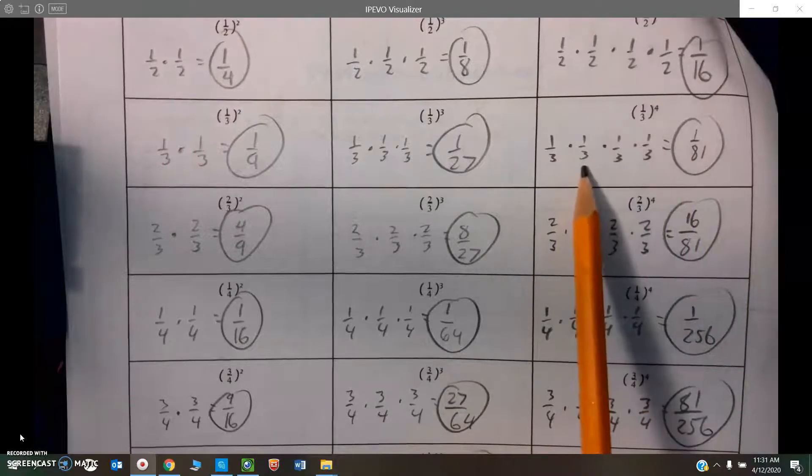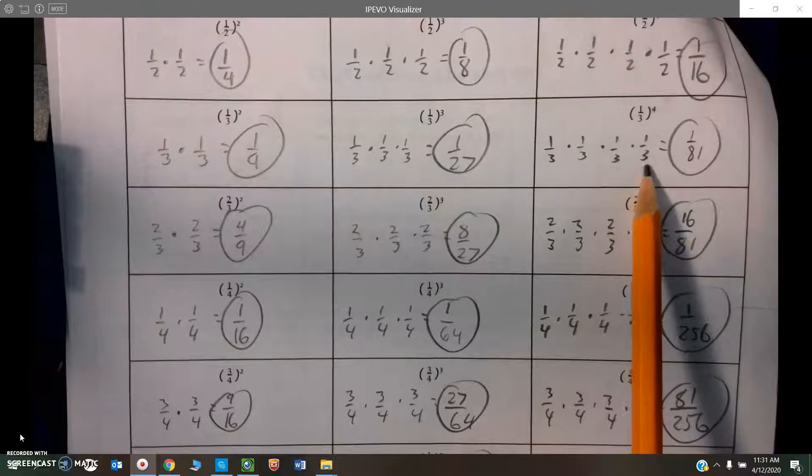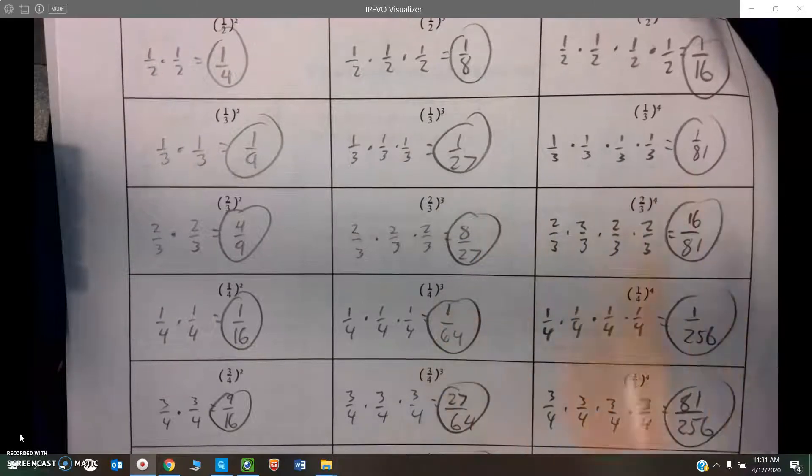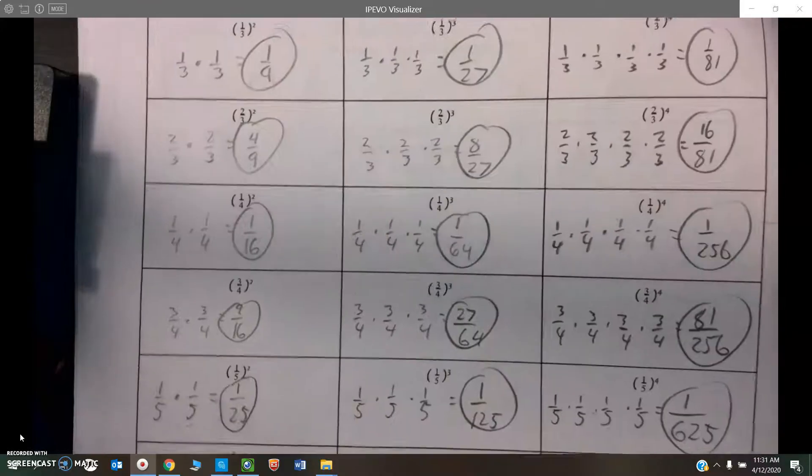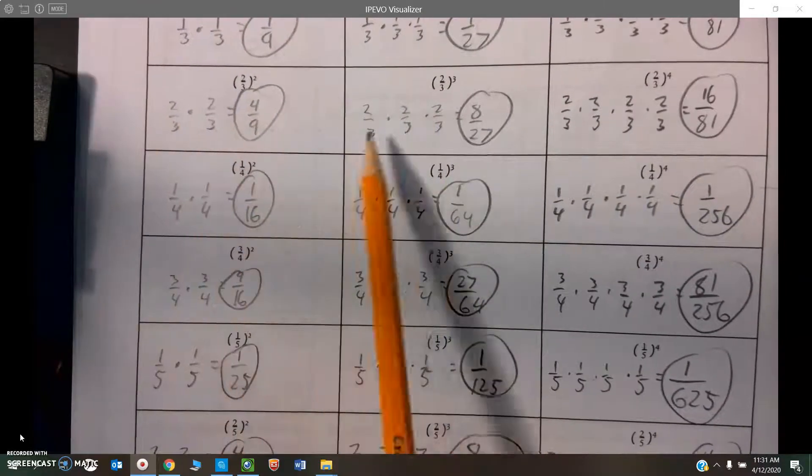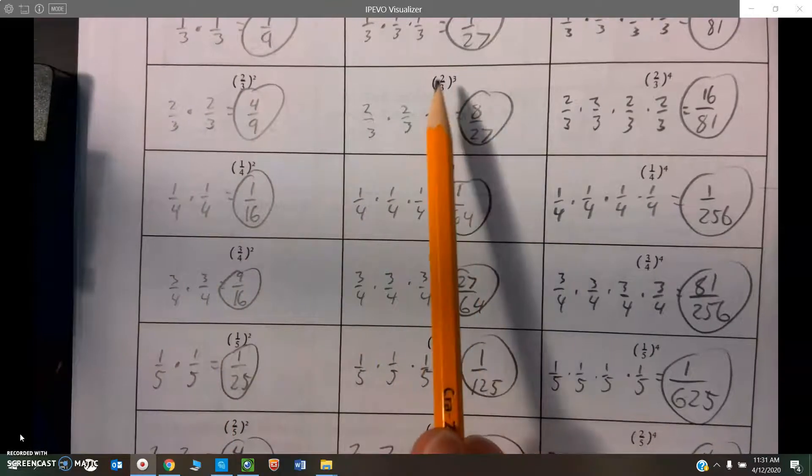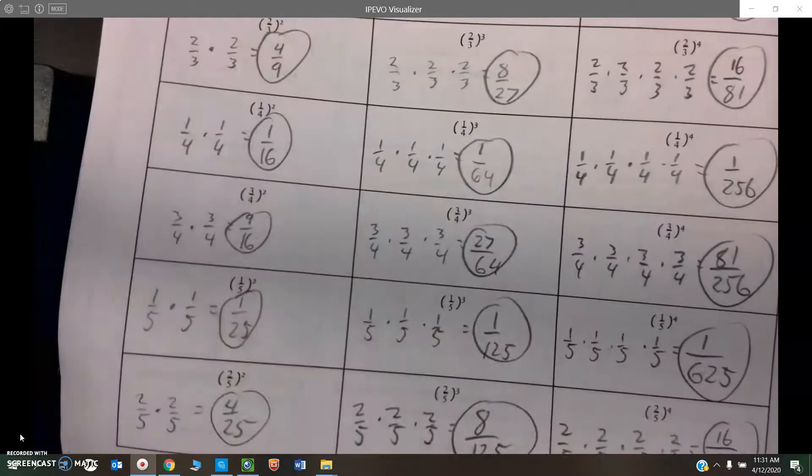3 times 3 is 9, times 3 is 27, times 3 is 81. So the denominators are just increasing. But then down below, when you see that we're working with more and more complex fractions, the numerators will change as well because they have a number other than 1 in the numerator.